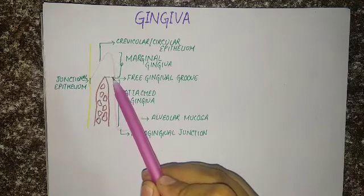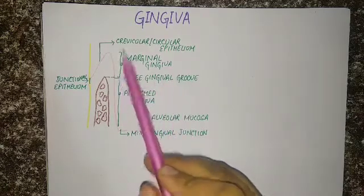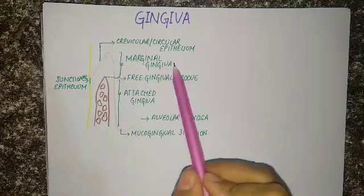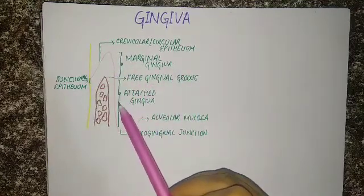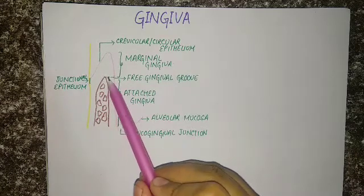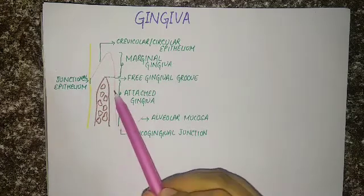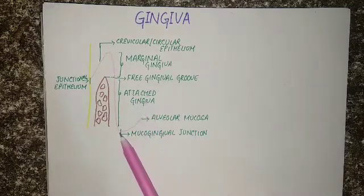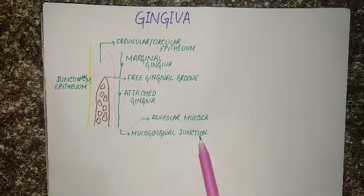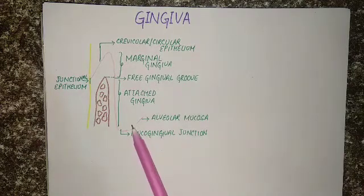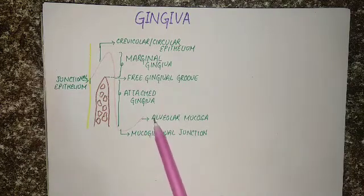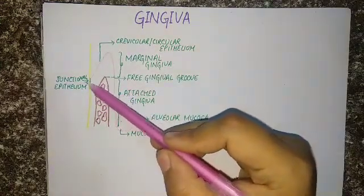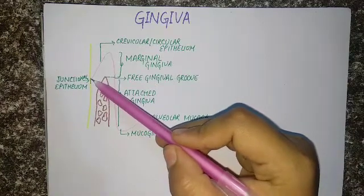Corresponding to the alveolar crest, the soft tissue part of the gingiva is called the free gingival groove. The part from the tip of the gingiva till the free gingival groove is called the marginal gingiva. The part of the gingiva which is attached onto the bone is called the attached gingiva. After attached gingiva, there is a junction called the mucogingival junction, and after that the rest of the part is called the alveolar mucosa. On this side, the junctional epithelium is present.